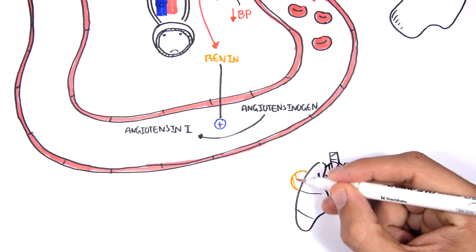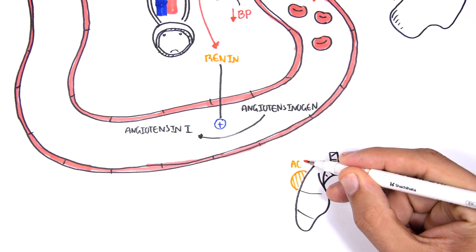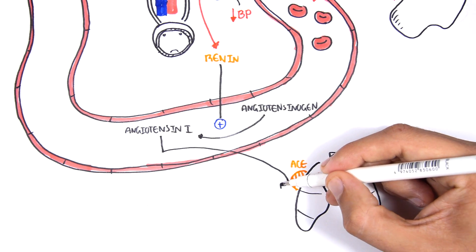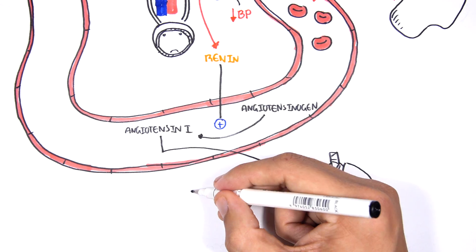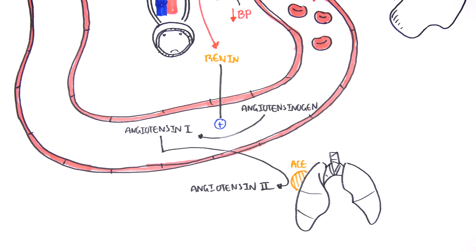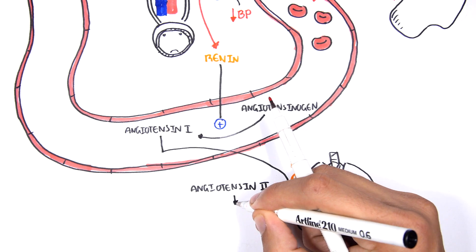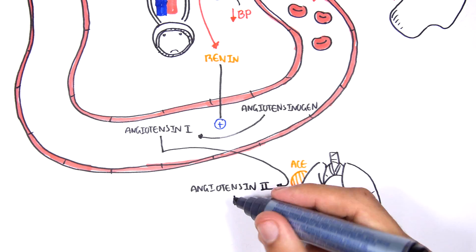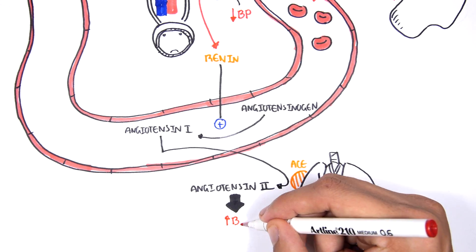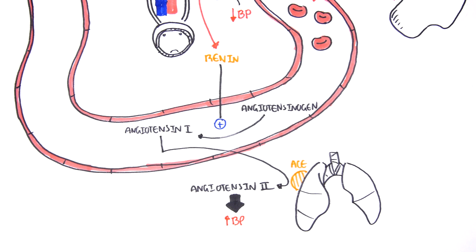Renin will convert angiotensinogen to angiotensin-1. Angiotensin-1 is not very potent. But when angiotensin-1 travels to the lungs, it will encounter an enzyme called ACE, angiotensin-converting enzyme. ACE will convert angiotensin-1 to angiotensin-2, which is a very potent hormone that increases blood pressure through several mechanisms.